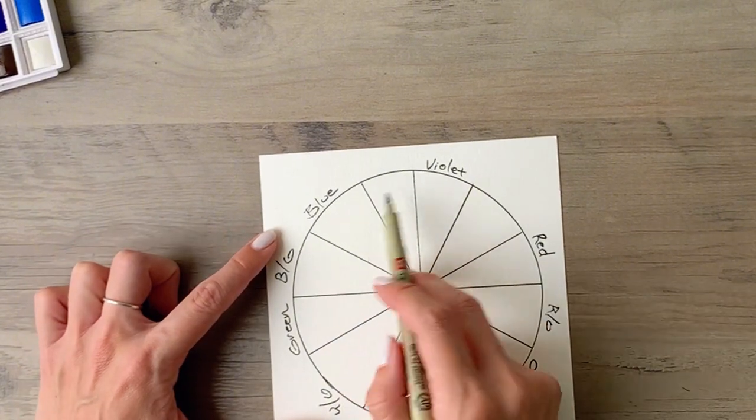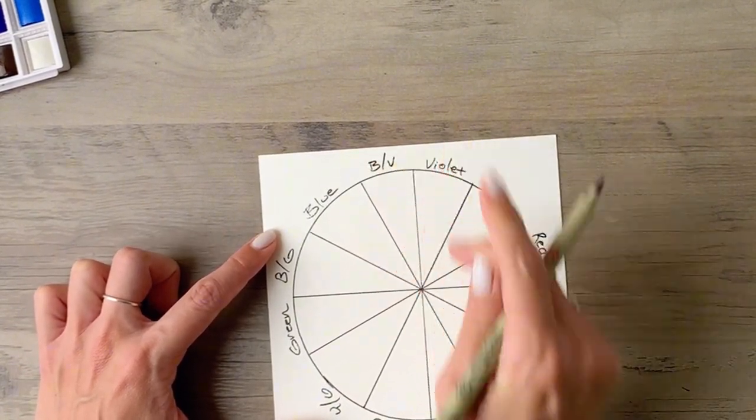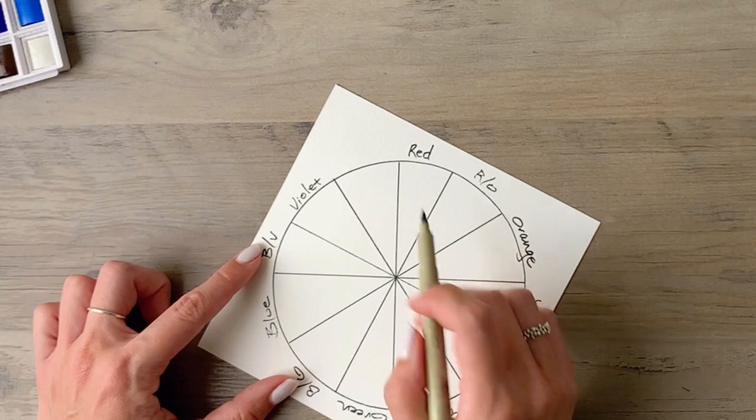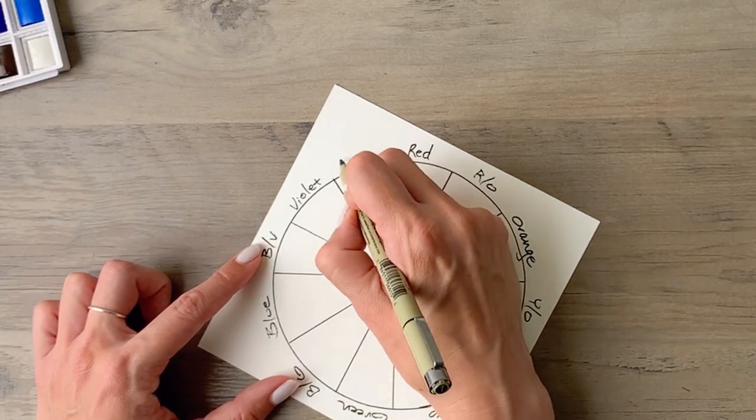Between blue and violet, you'll get blue violet. And then lastly, between red and violet, you'll get red violet.